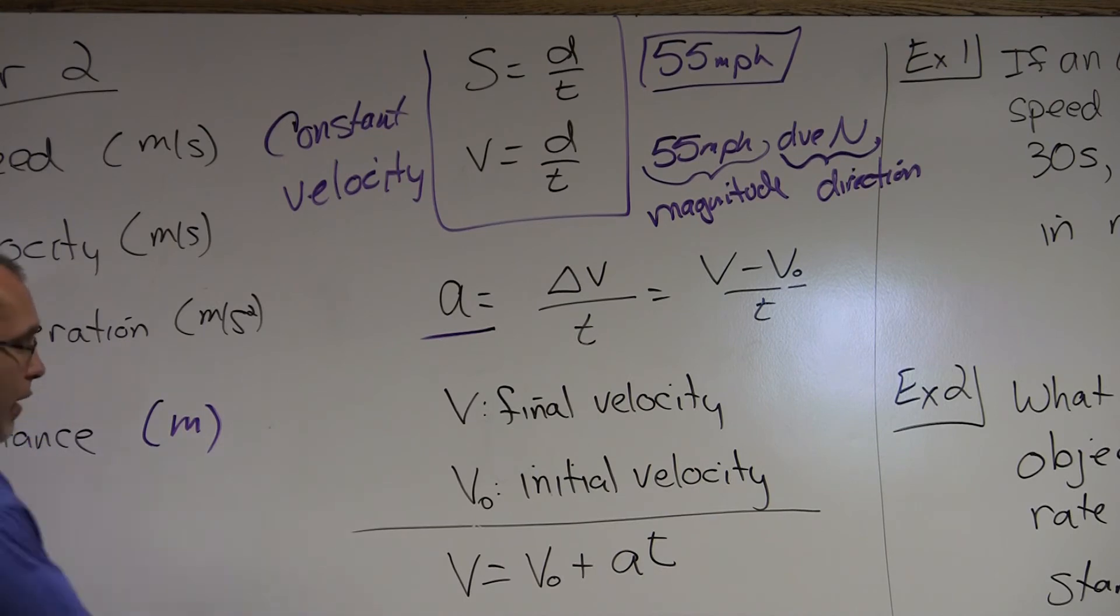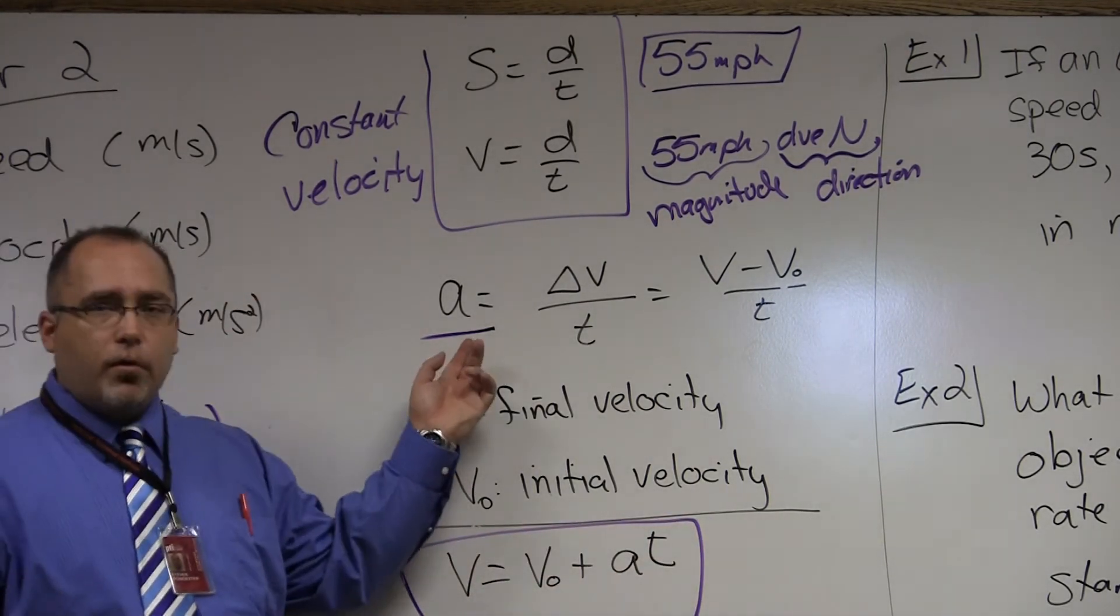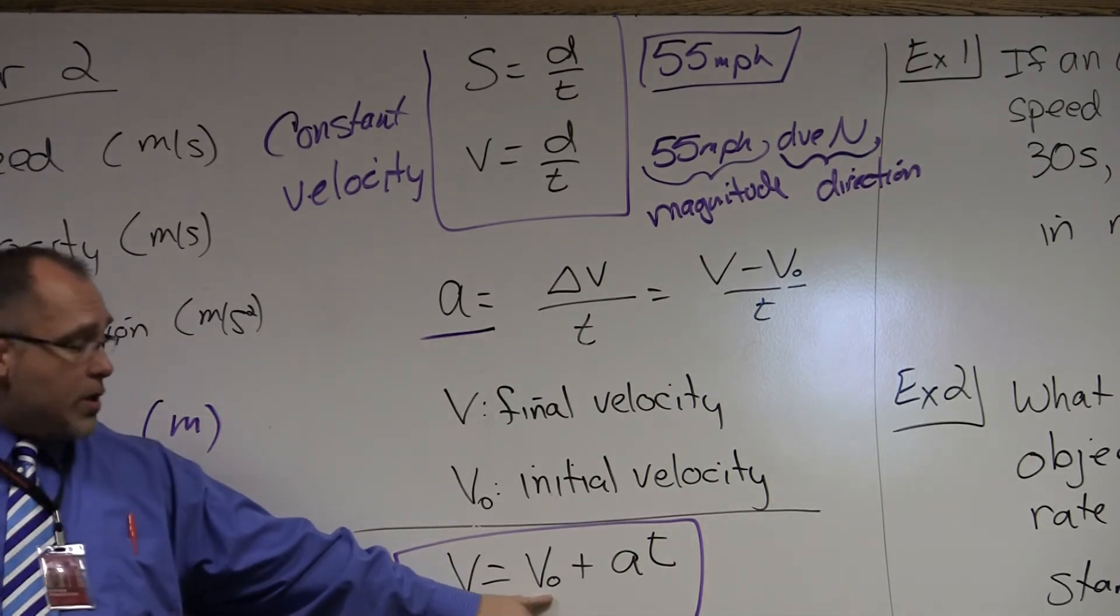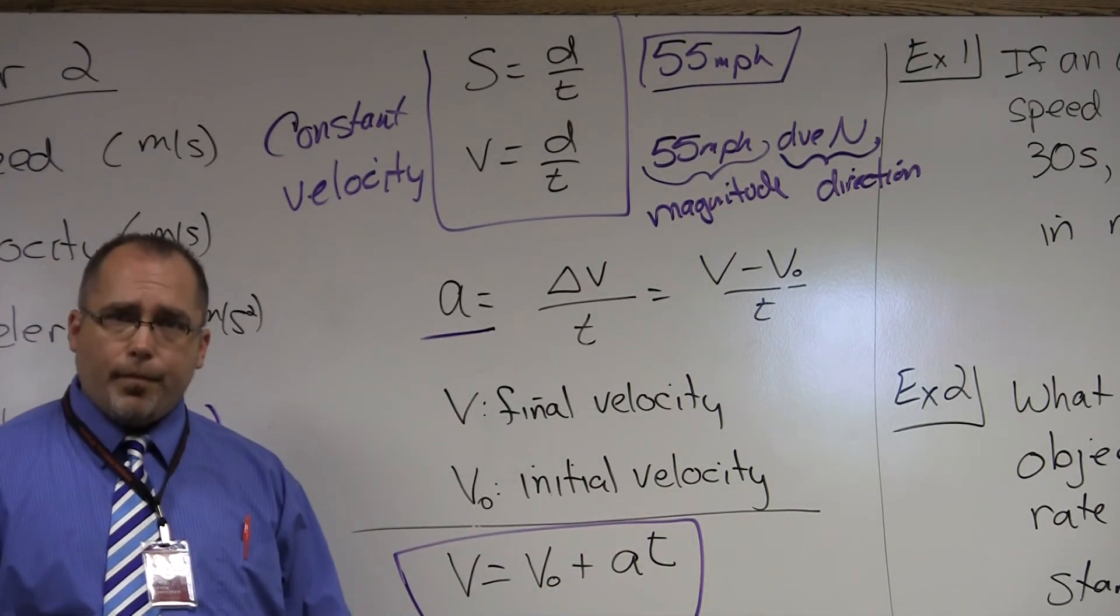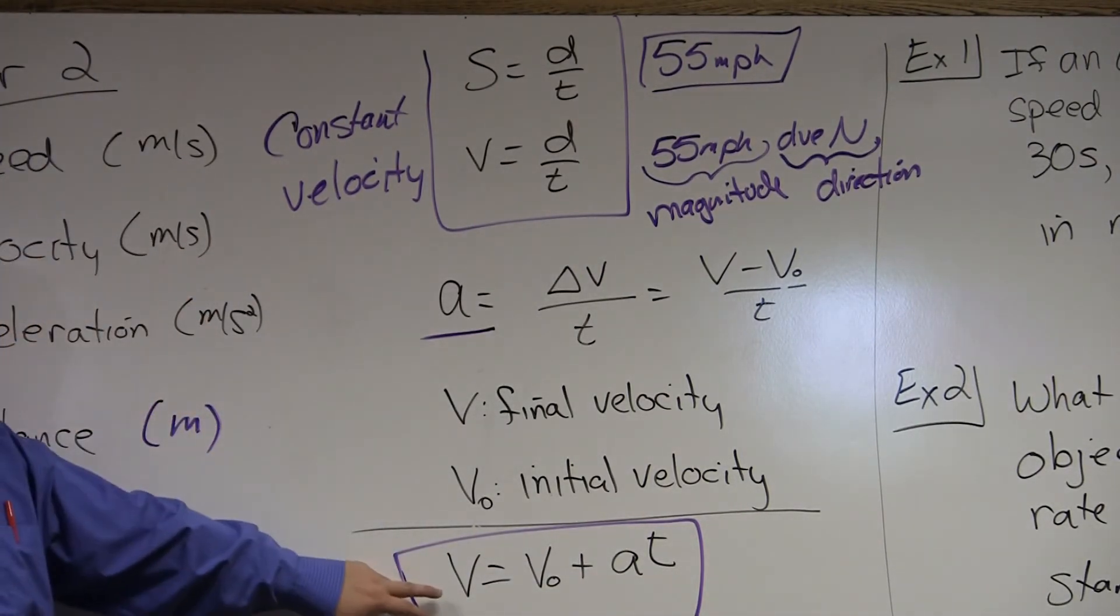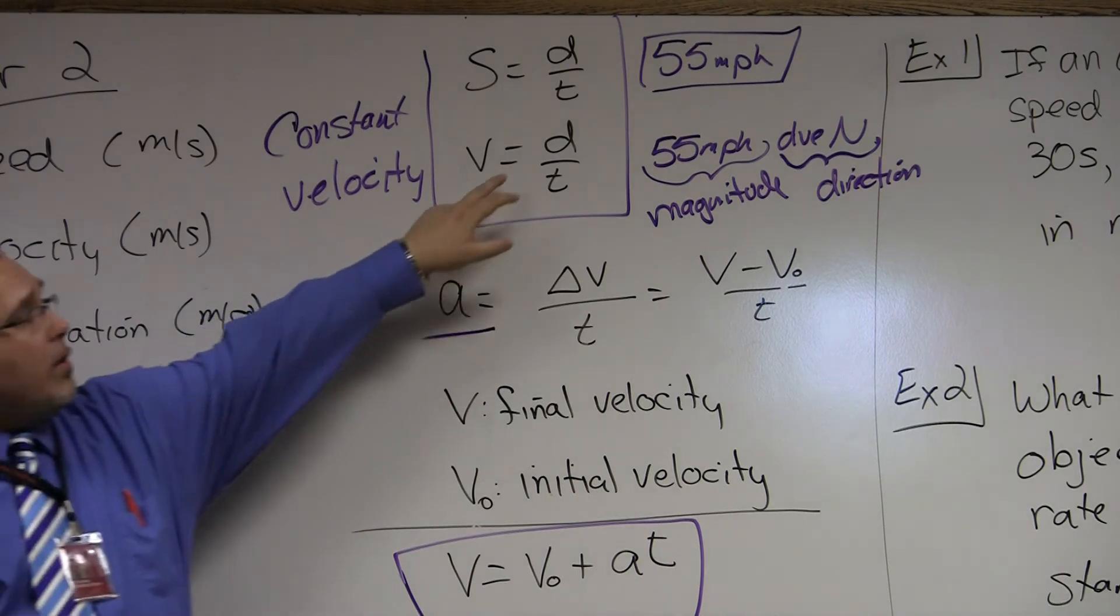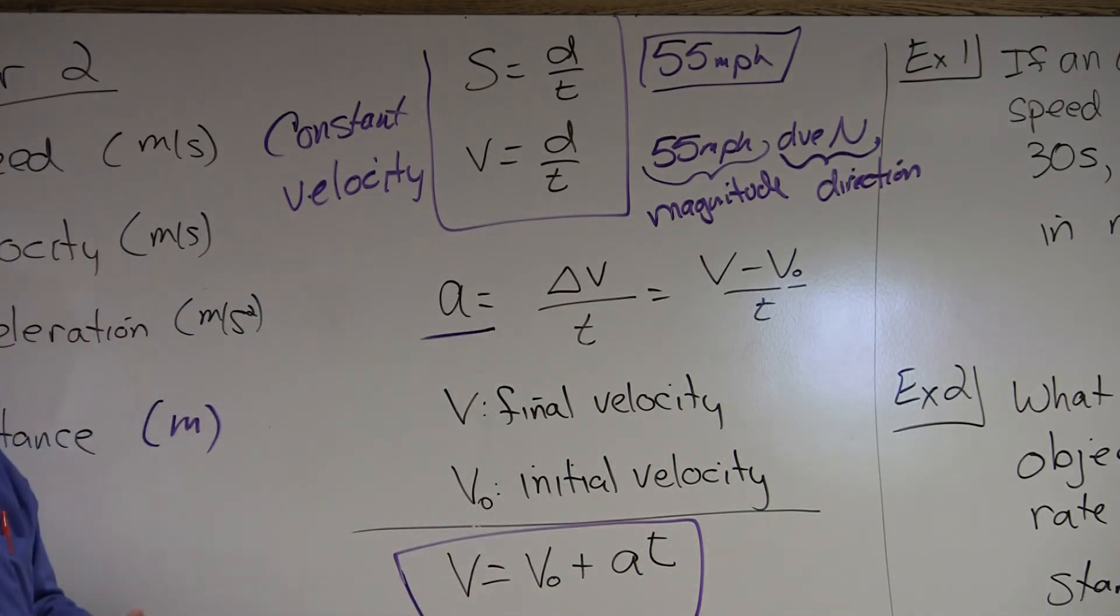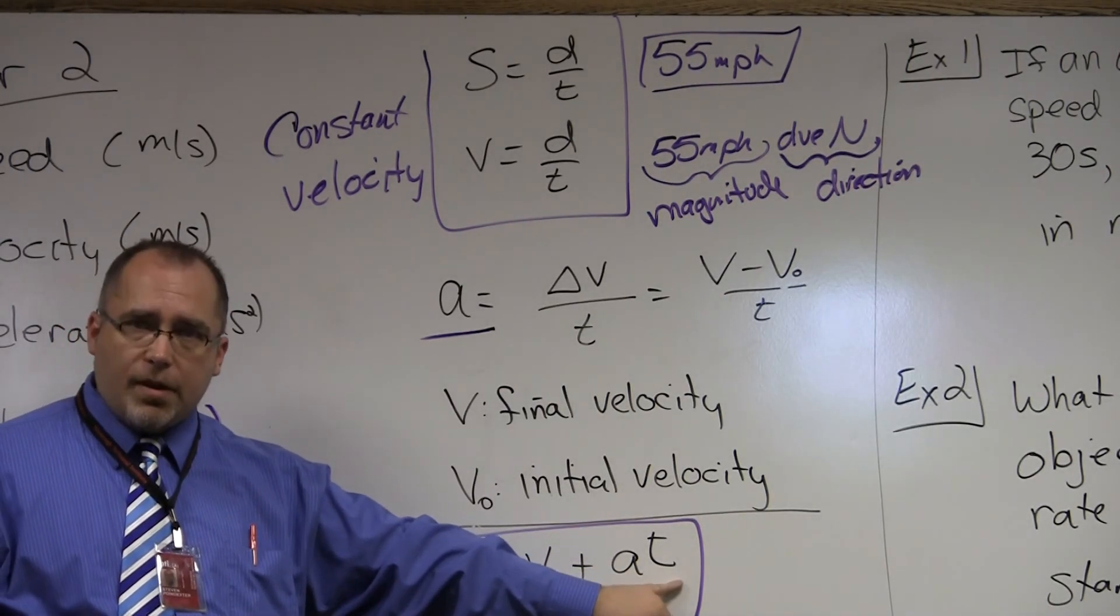But if we look down here, all I did was rearrange our acceleration formula for that final velocity. And we get our final velocity is equal to our initial velocity plus acceleration times time. So if you're asked to find velocity, you have to first ask, is it accelerating or is it constant? If it's a constant velocity, you're just going to use distance divided by time. If the object is accelerating, you're going to have to use your initial velocity plus acceleration times time.